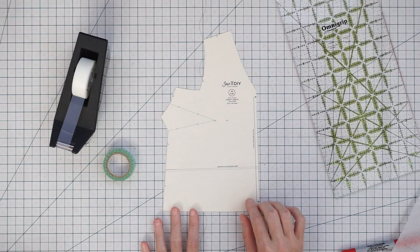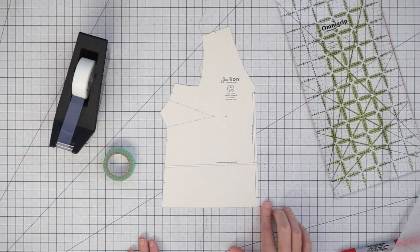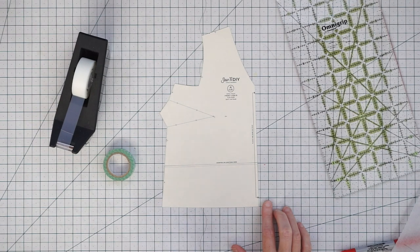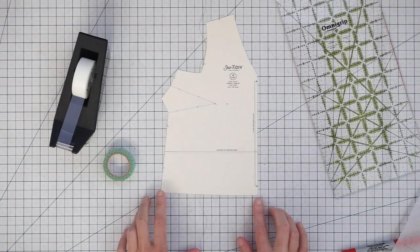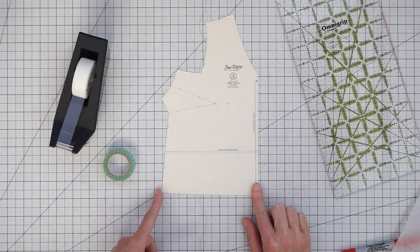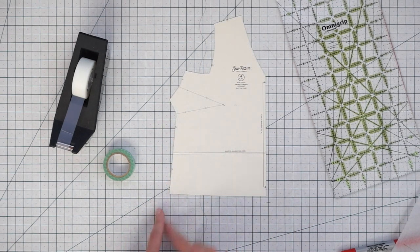So you might be tempted just to add or shorten right at the hem and sometimes that's going to work and sometimes it's not. If you are just adding on at the hem you're going to end up with a much bigger hem because this line will come out and it's going to be bigger.